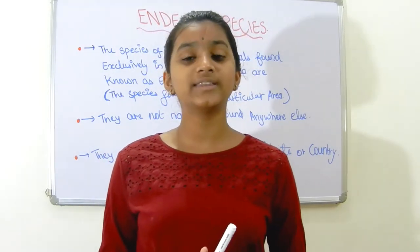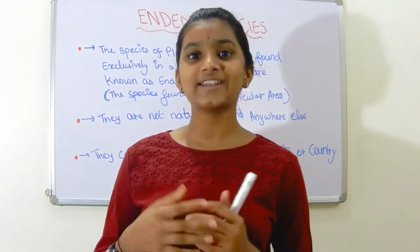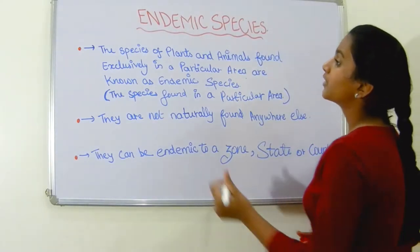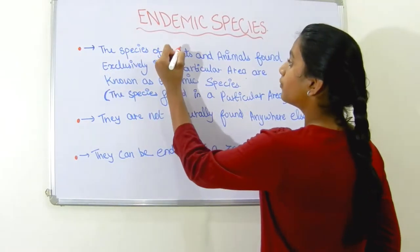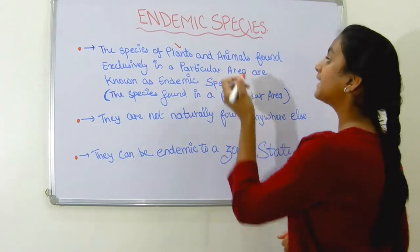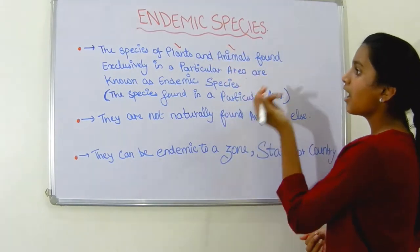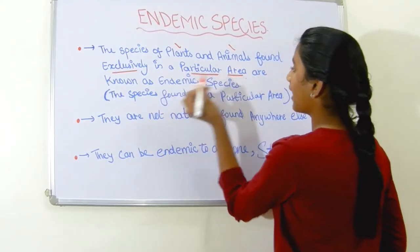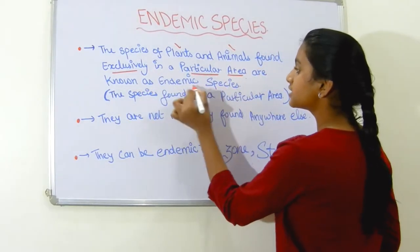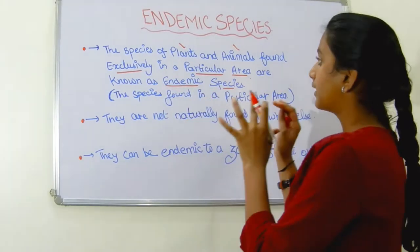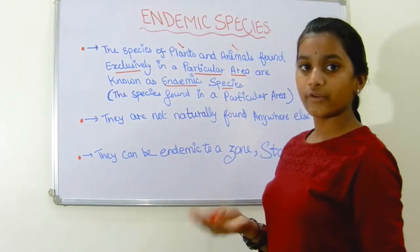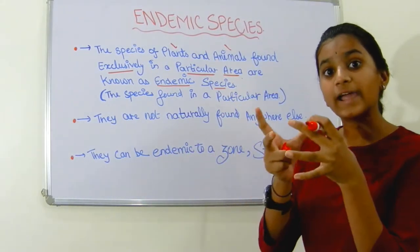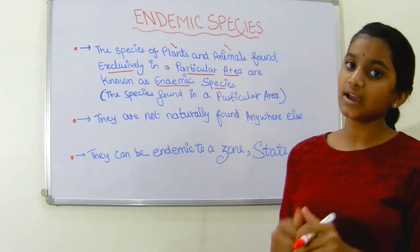So we are going to continue with endemic species. Let us see what endemic species are and some examples. The species of plants, which is the flora, and animals, which is the fauna, found exclusively in a particular area are known as endemic species. Exclusively means only in a particular area — they are known as endemic species.